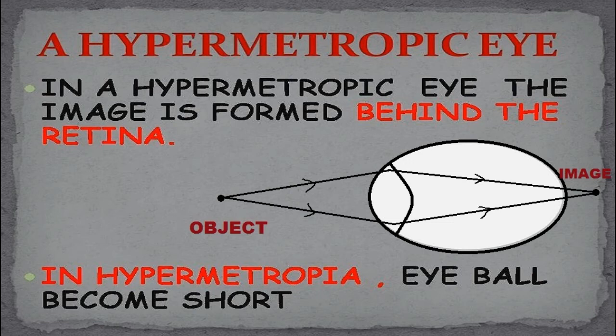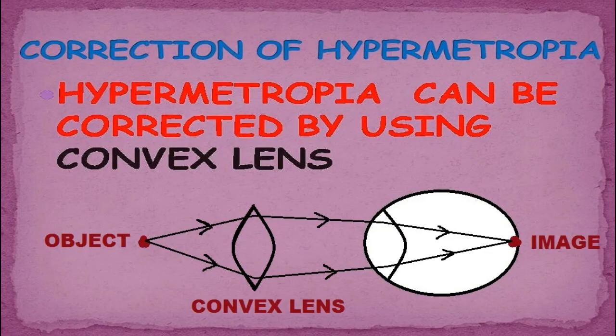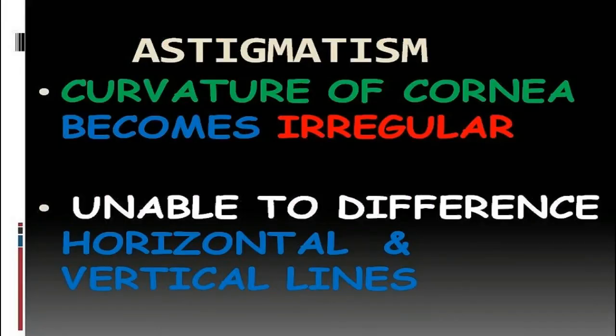That's why a person is unable to see nearby objects. In hypermetropia, the eyeball becomes short — the size of the eyeball becomes smaller. The correction of hypermetropia can be done by using a convex lens, because a convex lens is a converging lens. It converges the light rays from objects, and those rays are again converged by the eye lens so the final image is formed on the retina.